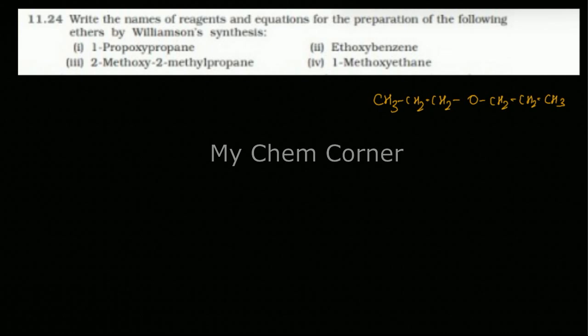Now if you have to prepare this, the bond has to break on any one side like this. And when you are trying to form, one will form alkoxide with the oxygen. The other one of course will form an alkyl halide.